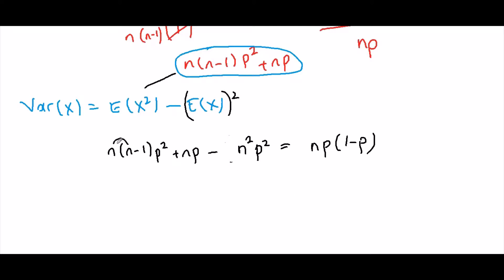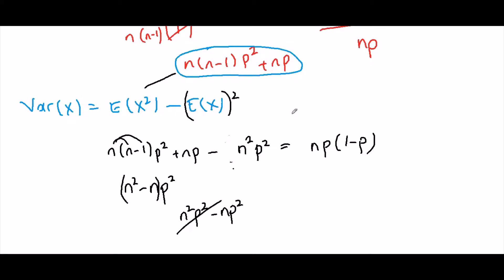Because if we distribute, we get n²p² minus np² plus np minus n²p². The n²p² terms cancel, and factoring out np gives us np(1 minus p). So this is the variance of the binomial distribution.